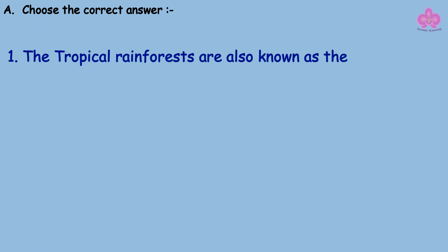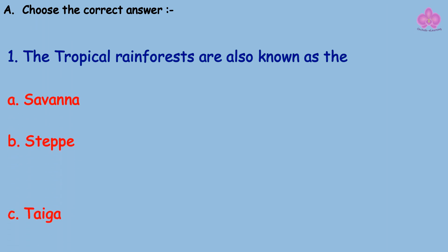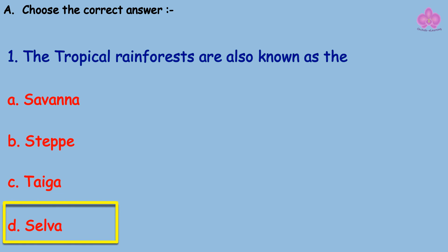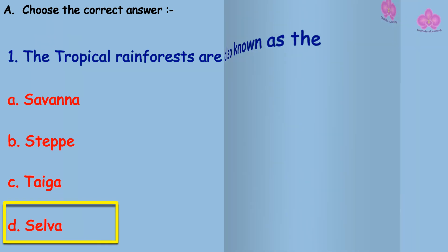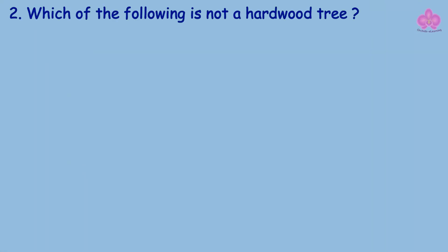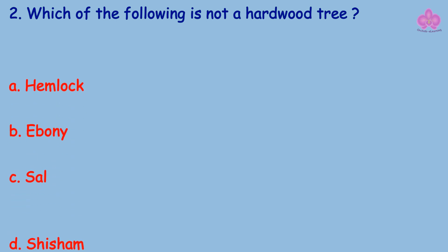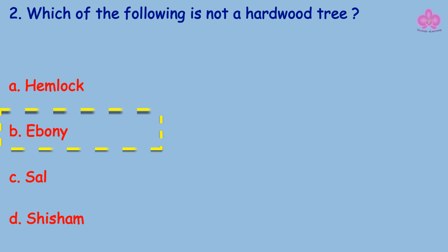Choose the correct answer. Question 1: The tropical rainforests are also known as the — Answer: D. Selva. Question 2: Which of the following is not a hardwood tree? — Answer: Ebony.